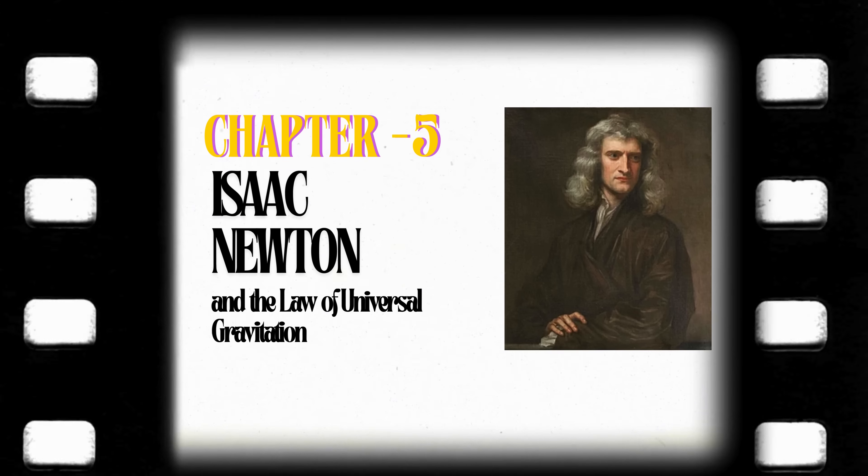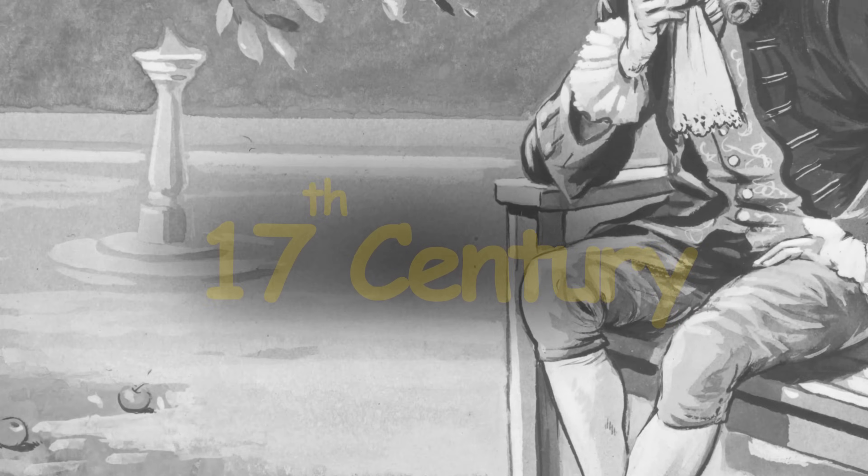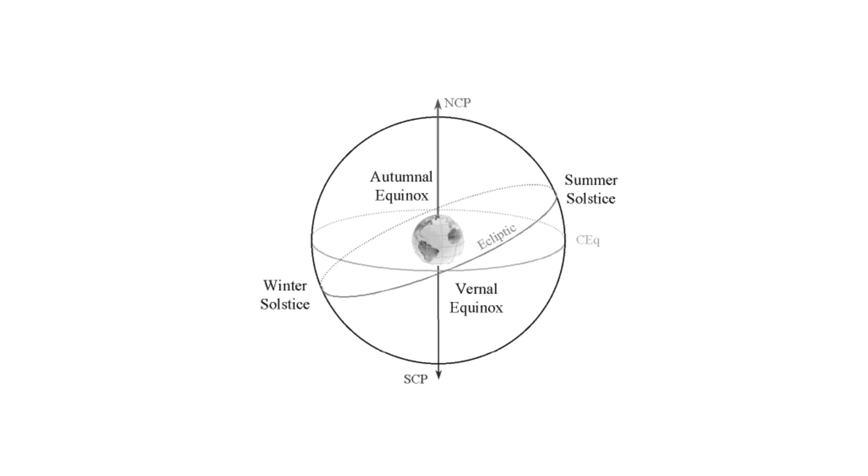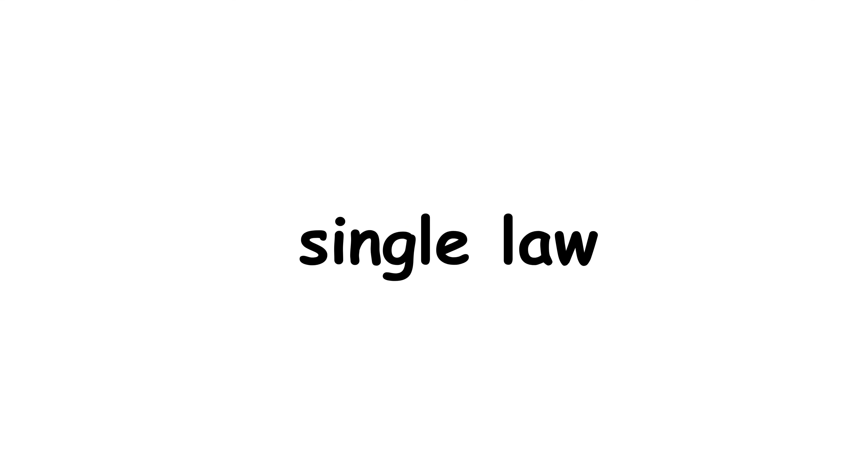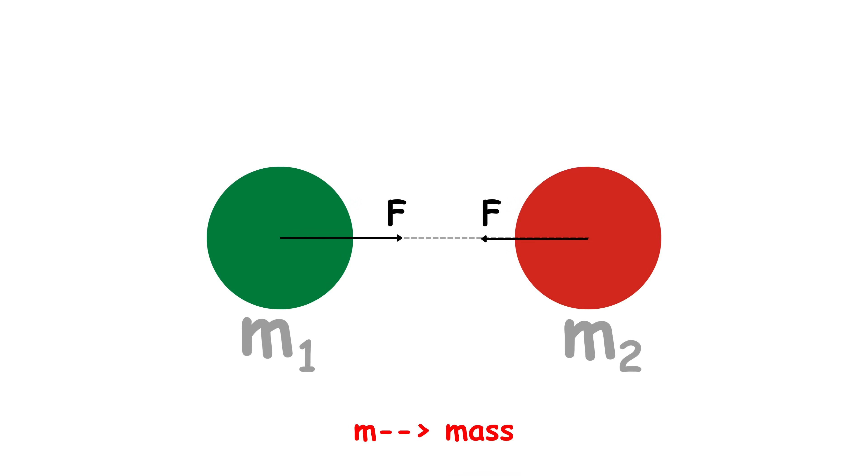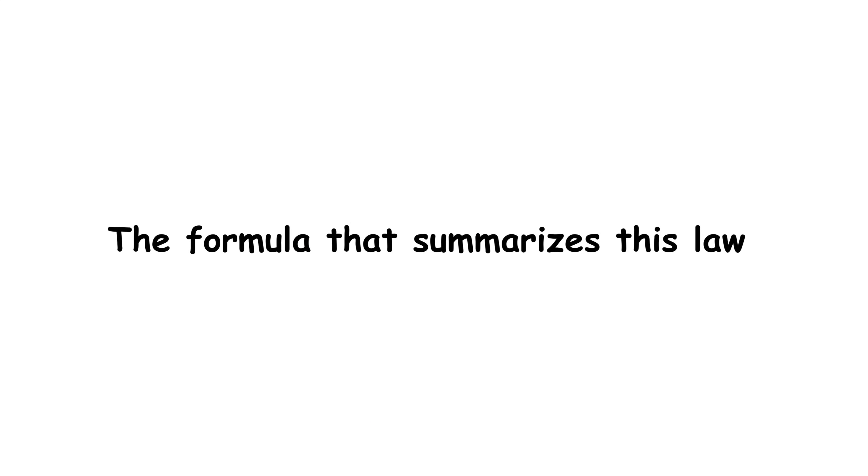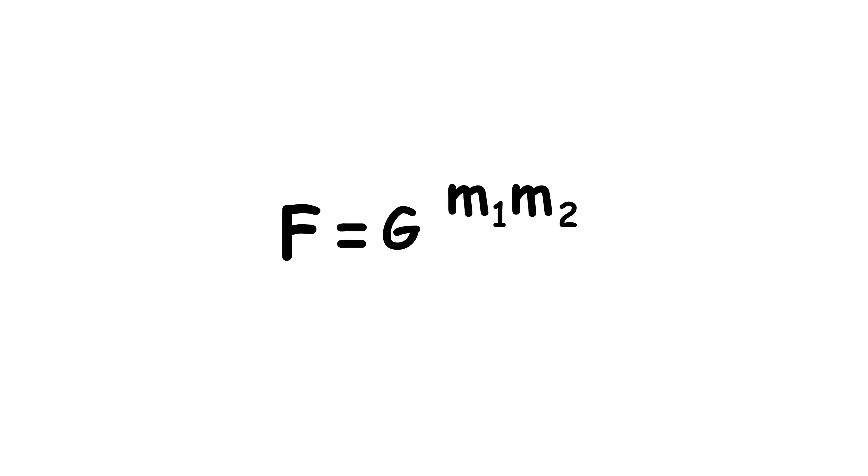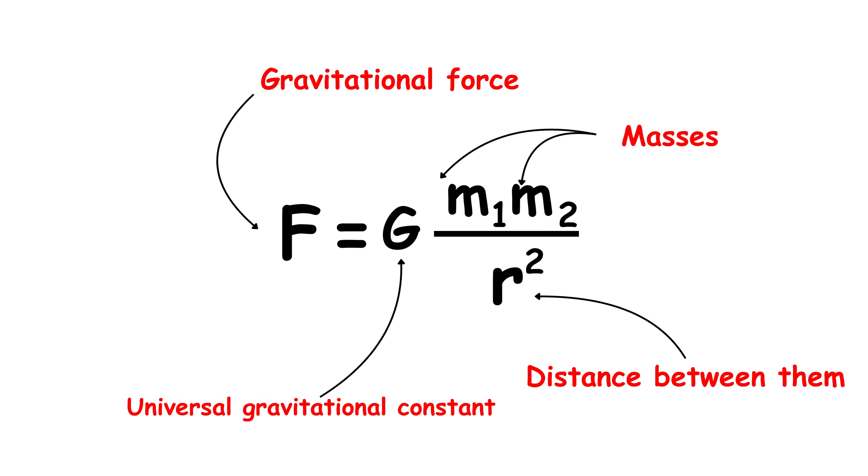Isaac Newton and the law of universal gravitation. In the 17th century, Isaac Newton unified celestial and terrestrial motion with a single law, universal gravitation. According to his theory, every particle in the universe attracts every other particle with a force proportional to their masses and inversely proportional to the square of the distance between them. The formula that summarizes this law is F equals G times quantity M1 times M2 over R squared, where F is the gravitational force, M1 and M2 are the masses, R is the distance between them, and G is the universal gravitational constant.